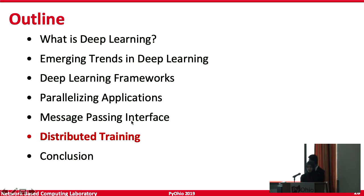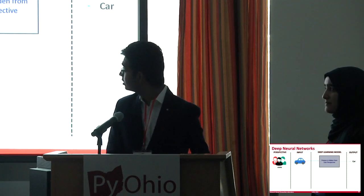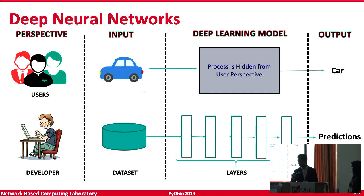Now Arpan will go over the importance of distributed training. From a user perspective, the input is an image of a car and the deep learning model is like a black box that maps input to output — in this case, a car prediction. From a developer perspective, the input is a dataset — a collection of images of cars or other vehicles to classify — and the deep learning model is a multi-layer model that maps the dataset to predictions.